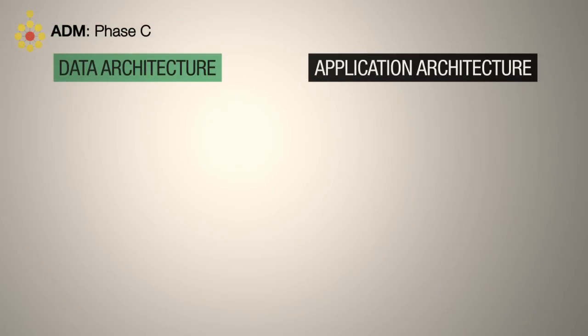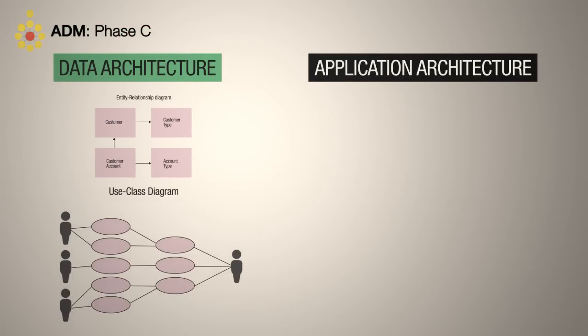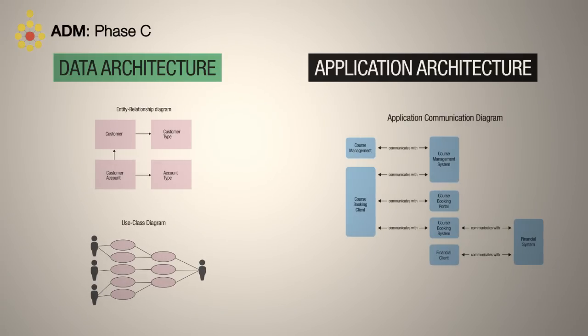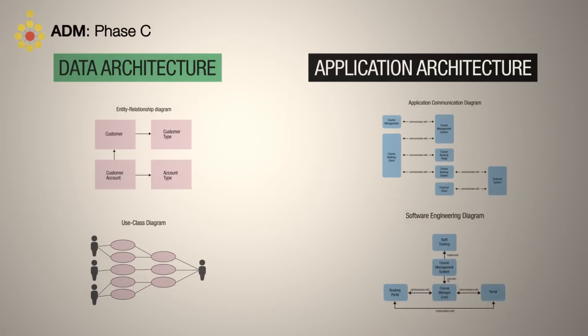For example, data architecture might use entity relationship or class diagrams, whilst application architecture might use an application communication diagram or software engineering diagram.